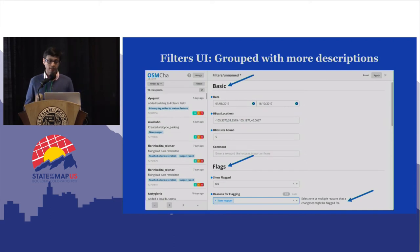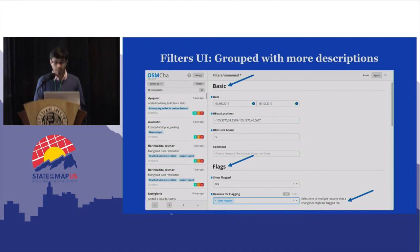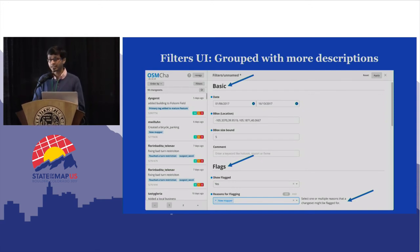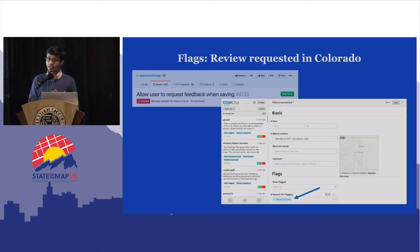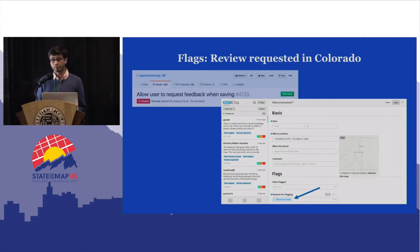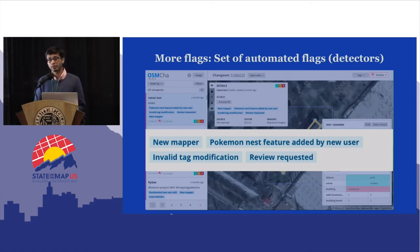This is how the new OSM-Char looks. We've grouped the filters so people new to the tool can easily get started — basic filters like date range, bounding box, and flags. For example, I'm looking for new mappers: any mapper with less than five edits, I want to see those changesets. There's also a cool feature added this year by Brian and the iD team allowing users to request feedback — you can filter for folks who've asked for a review. We also have an open system called OSM-Compare, a repository where we collect detection rules: new mapper, Pokemon rules, modified tags, edits to mature features, review requests, and more.